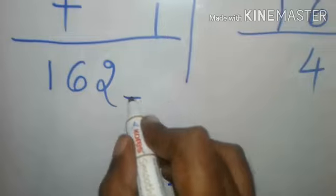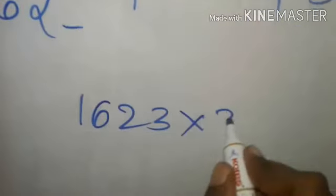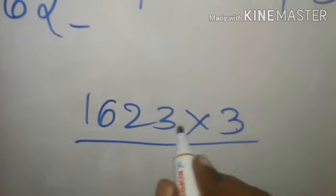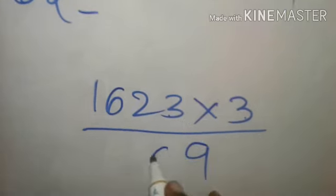1623 into 3. 1623 the number 3 that is to be written here. And the number 3 that is to be written here. So 1623 into 3. So 23 into 3 is 69. 163 is 48. Do the multiplication like this.